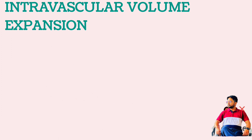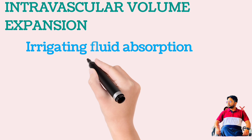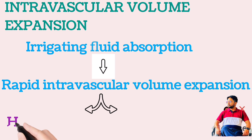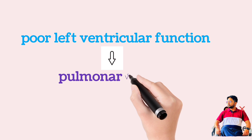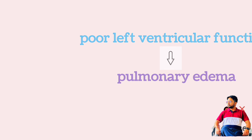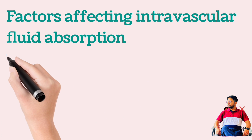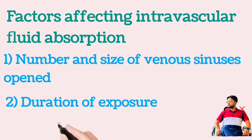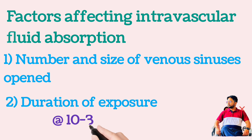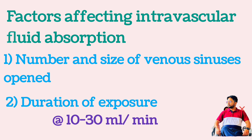Rapid intravascular volume expansion from systemic absorption of irrigating fluid results in systemic hypertension and reflex bradycardia. Patients with poor left ventricular function may develop pulmonary edema. Factors affecting intravascular fluid absorption are the number and size of venous sinuses opened, duration of exposure, and rate of absorption of fluid — 10 to 30 ml per minute. Duration should be kept less than one hour to prevent the development of TURP syndrome.